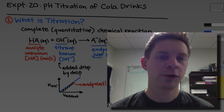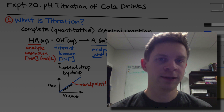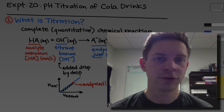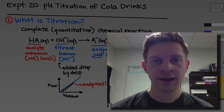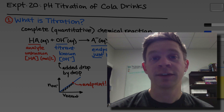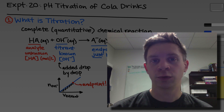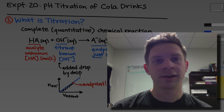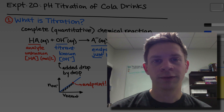Experiment 20 in CHEM 1212 is titled pH titration of cola drinks, and in this experiment we're going to practice the technique of titration, which we'll use multiple times throughout the semester in 1212 lab.